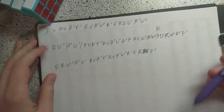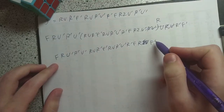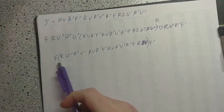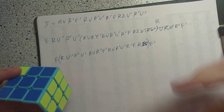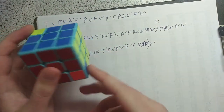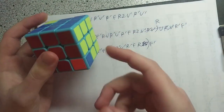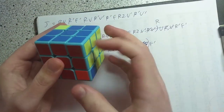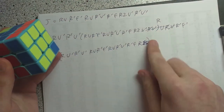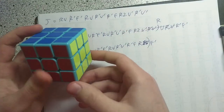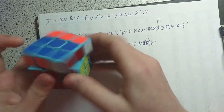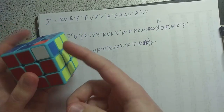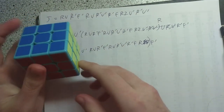Some of you might know this algorithm already — this is the standard algorithm for this case, which is called the Y permutation. You can also notice that at the front we have an F and at the end we have an F', so this itself is actually a conjugate. If we omit the F and F', we get another algorithm that swaps two corners and two edges. This algorithm is used in the beginner's method for solving the cube blindfolded, allowing you to swap just two corners at a time. You can use other conjugates to move a corner into position, do the algorithm, and then undo the conjugate.